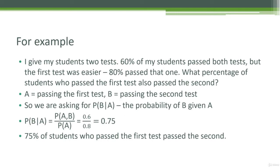Let's look at a real example. Say I give my students two tests, and overall 60% of my students passed both tests. So P(A,B) = 60%. However, the first test was easier — 80% of my students passed that one, so P(A) = 80%. This gets confusing quickly with all the A's, B's, commas, and pipes, but let's review: 60% passed both tests, so P(A,B) = 60%, and P(A) = 80%.